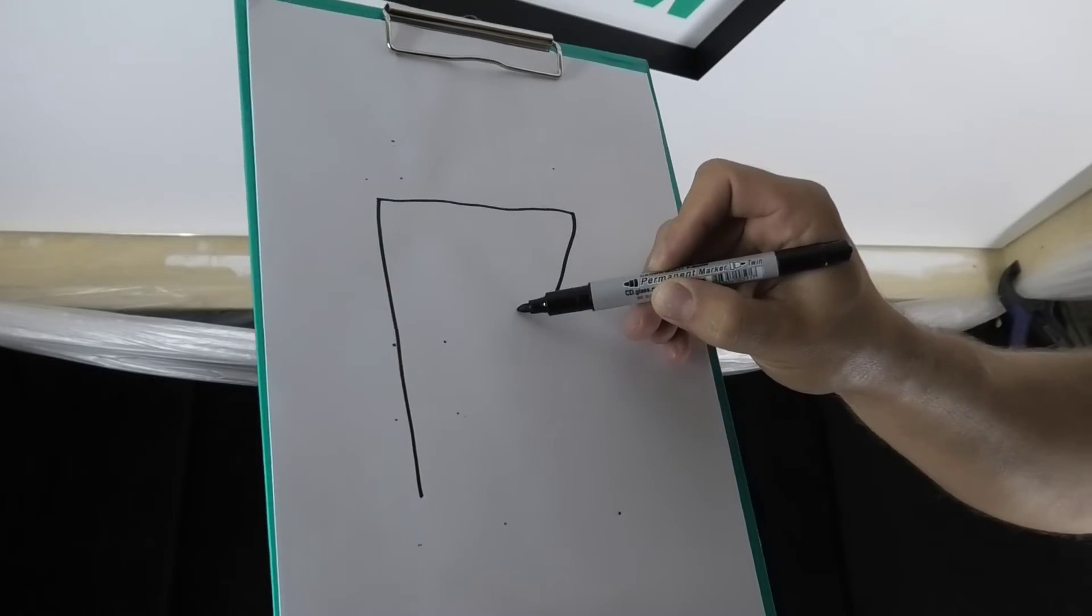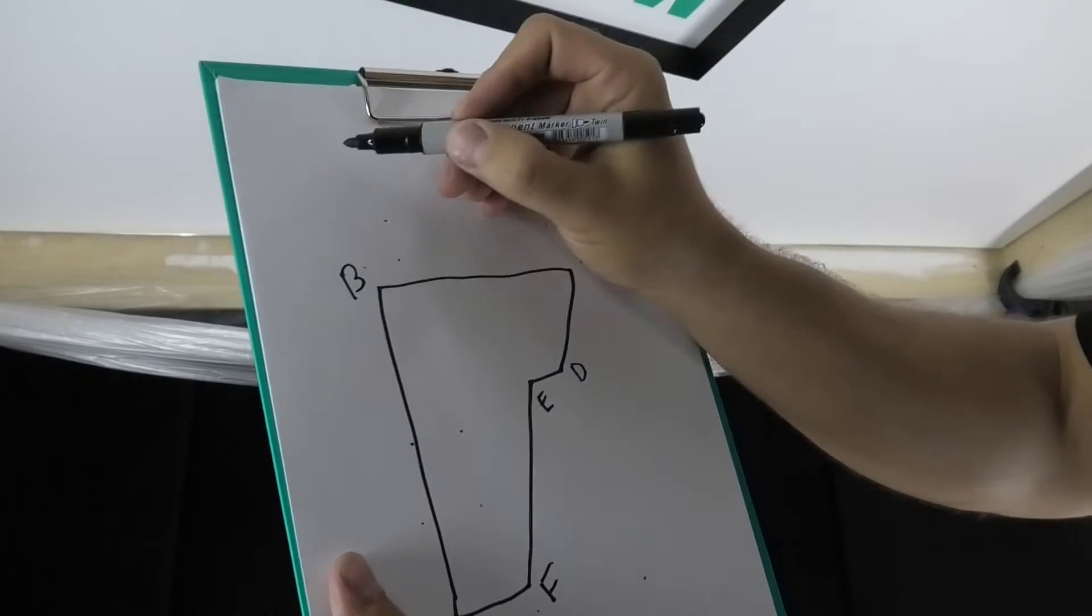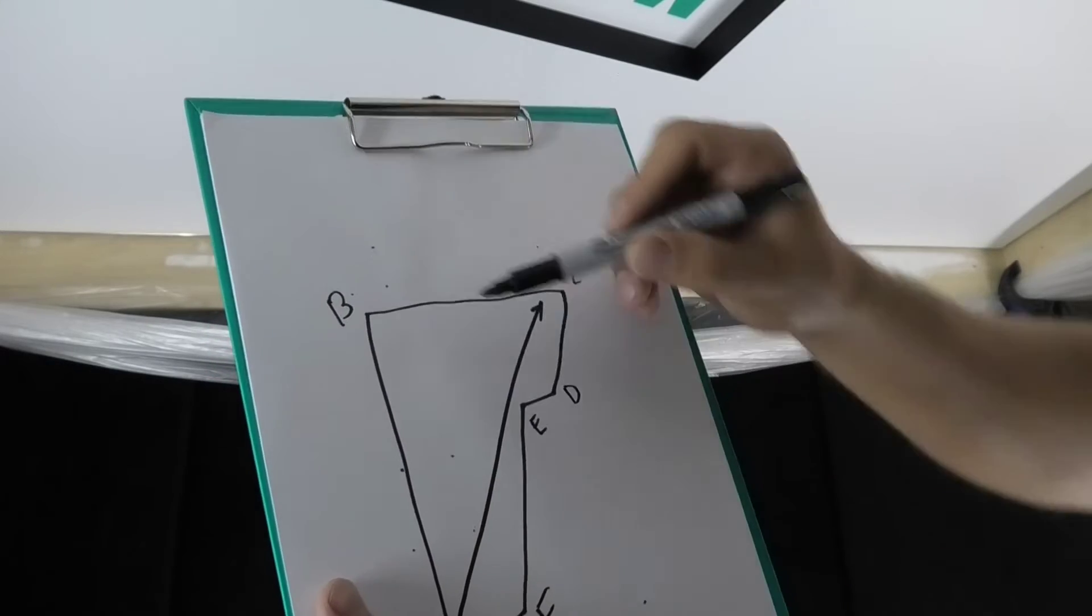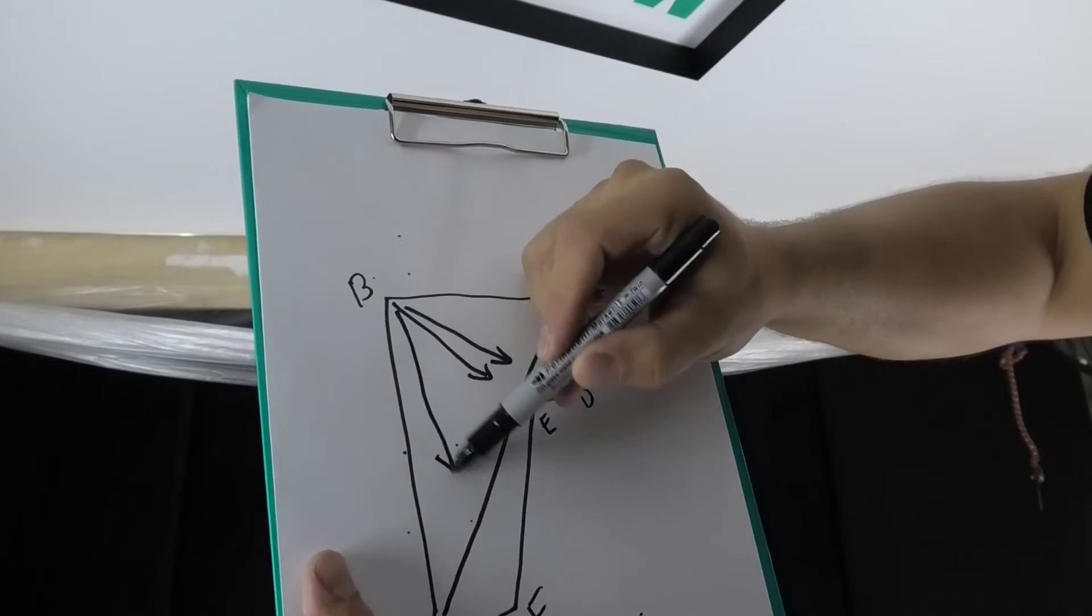If the corners of the room differ from 90 degrees, then the dimensions of the walls and diagonals from corner to corner will be needed. We mark each corner with a letter in alphabetical order clockwise.